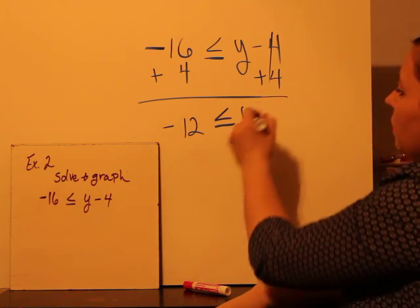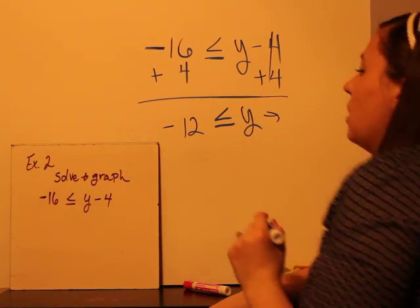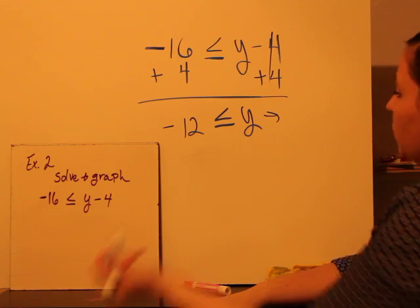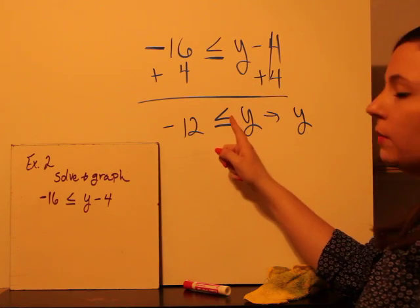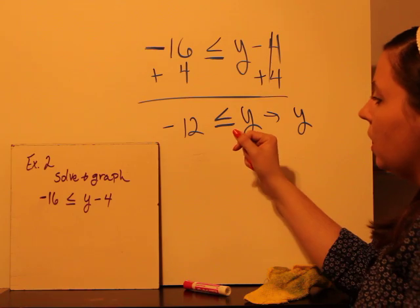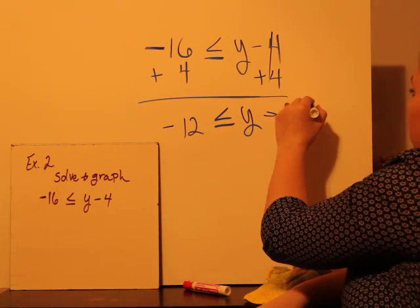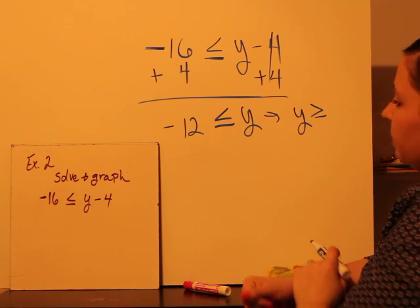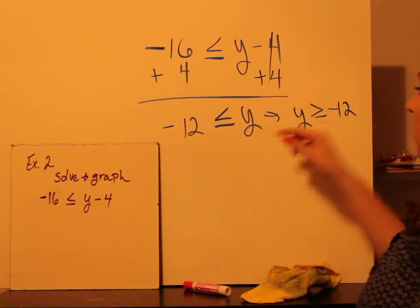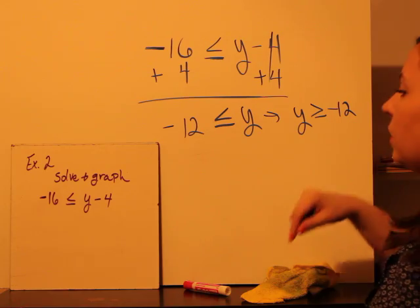Now it may help some of you to rewrite these. And the way you can do that, put your variable on the left. And whichever way the alligator was facing, in this case it's facing to the variable, so I'm going to write it facing to the variable. And then just put the negative 12 over here. That will help you to graph it more easily.